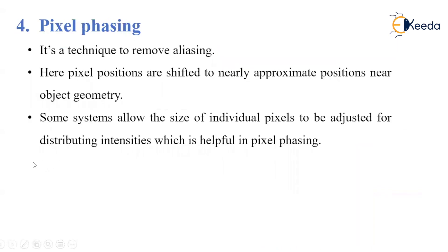The fourth method is pixel phasing. It is a technique to remove the aliasing effect where pixel positions are shifted to more nearly approximate positions to near object geometry. Some systems allow the size of individual pixels to be adjusted for distributing intensities, which is helpful in pixel phasing. The staircase effect is smoothed out by moving the electron beam to more nearly approximate positions specified by the object geometry. These are the four anti-aliasing techniques used to remove the aliasing effect for rasterized images or objects.